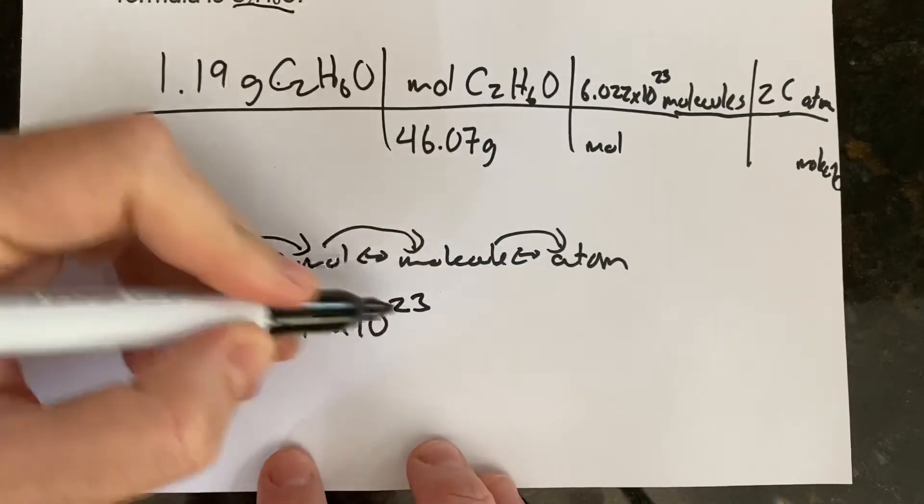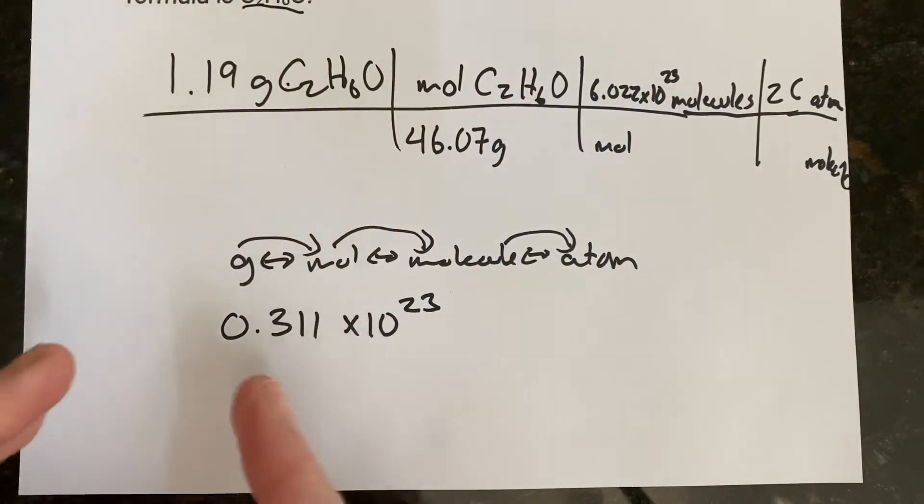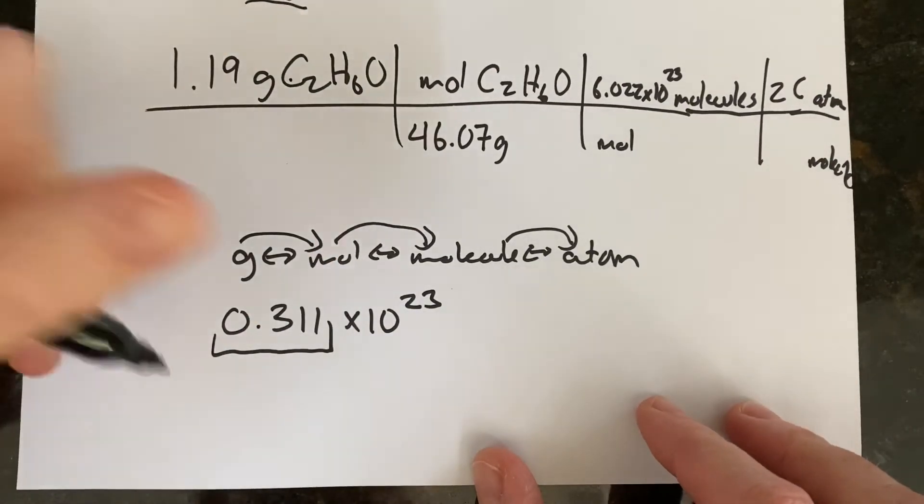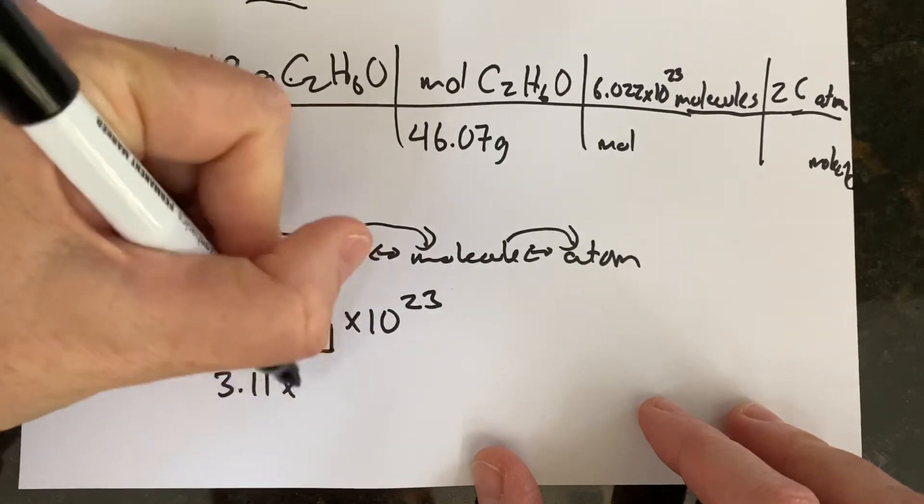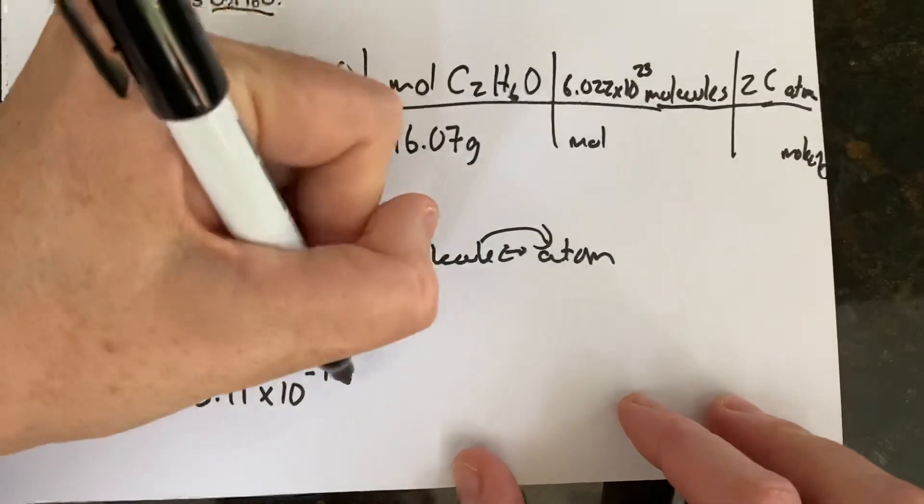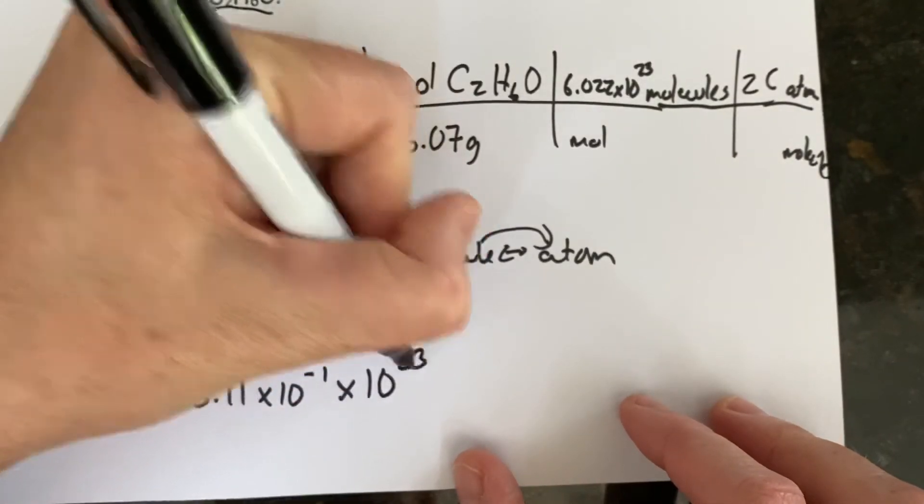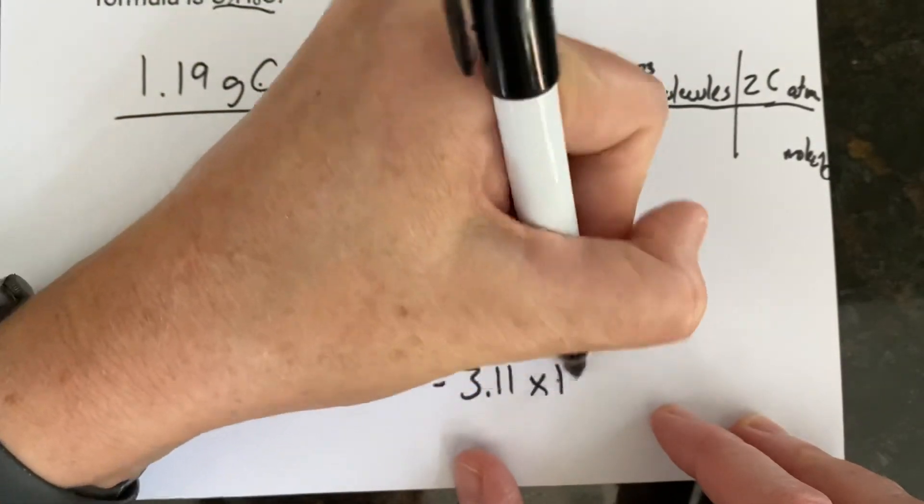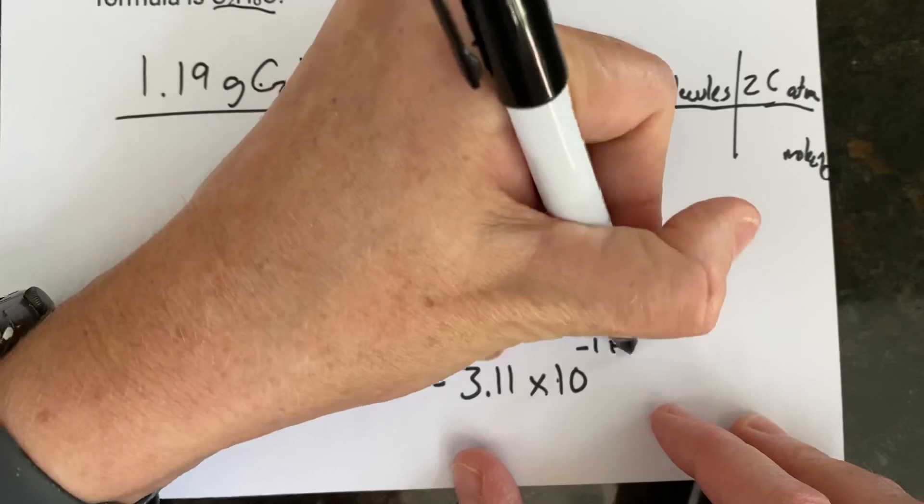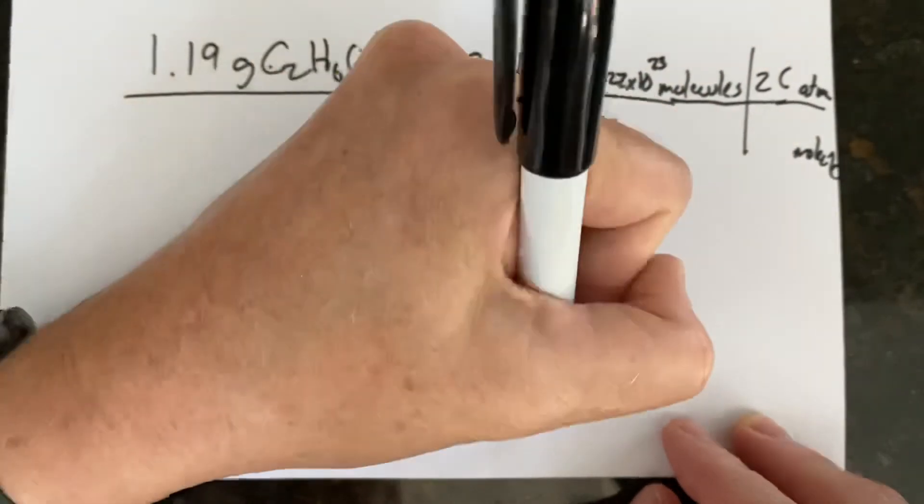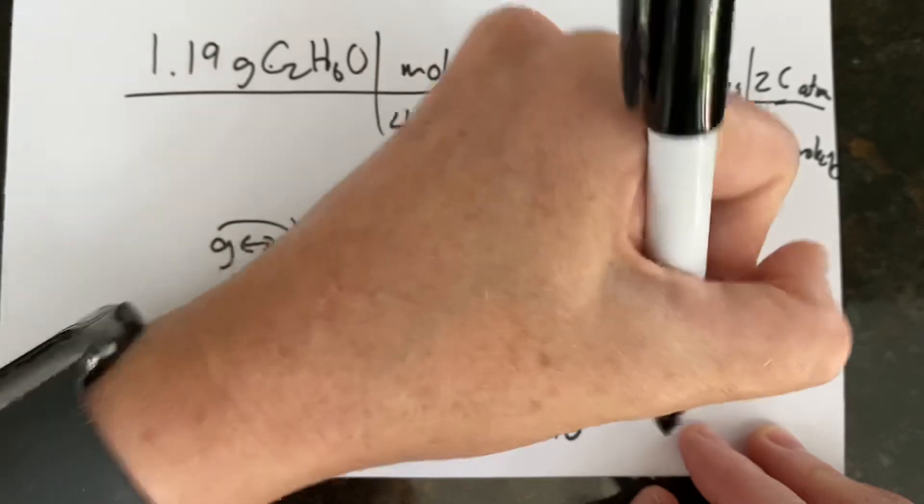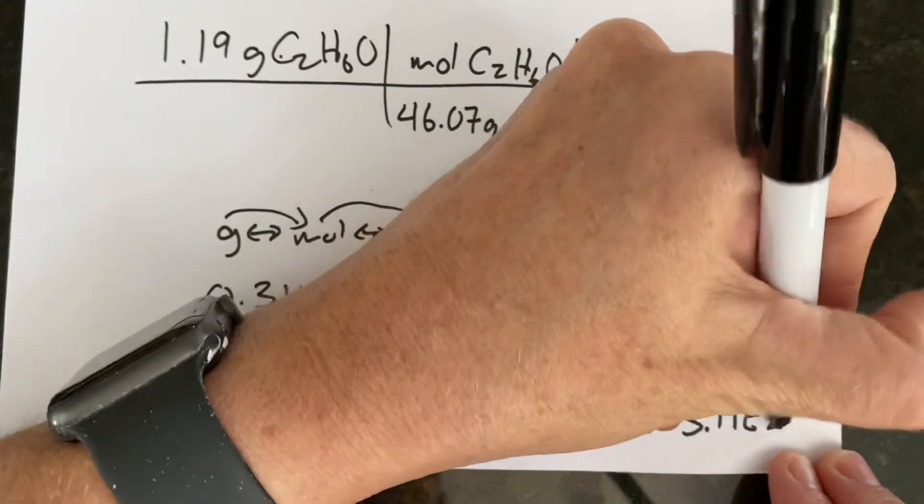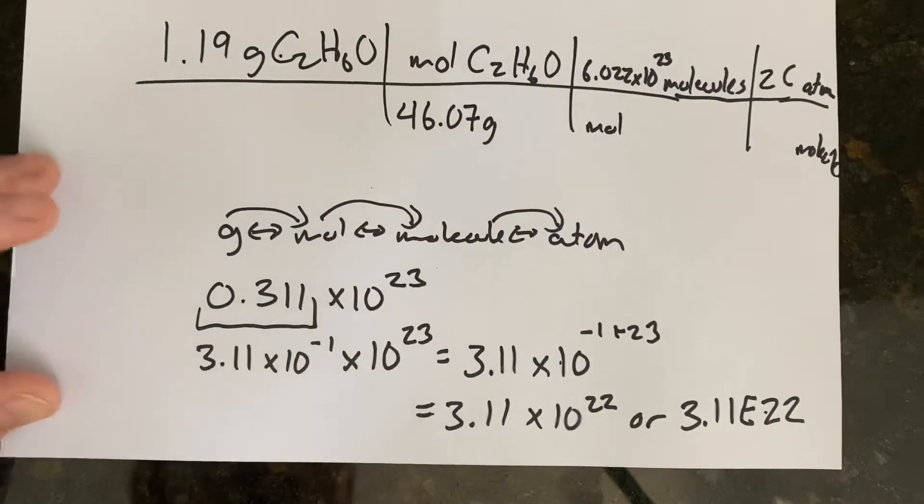If you didn't do the 10 to the 23rd, let's go ahead and make sure that this is in scientific notation. So in order to do that, you want to take this and put it in scientific notation first. That would be 3.11 times 10 to the negative 1. And now we bring down that times 10 to the 23rd, which would be 3.11 times 10 to the negative 1 plus 23, or 3.11 times 10 to the 22. Or your book might have you put it 3.11e22 carbon atoms.